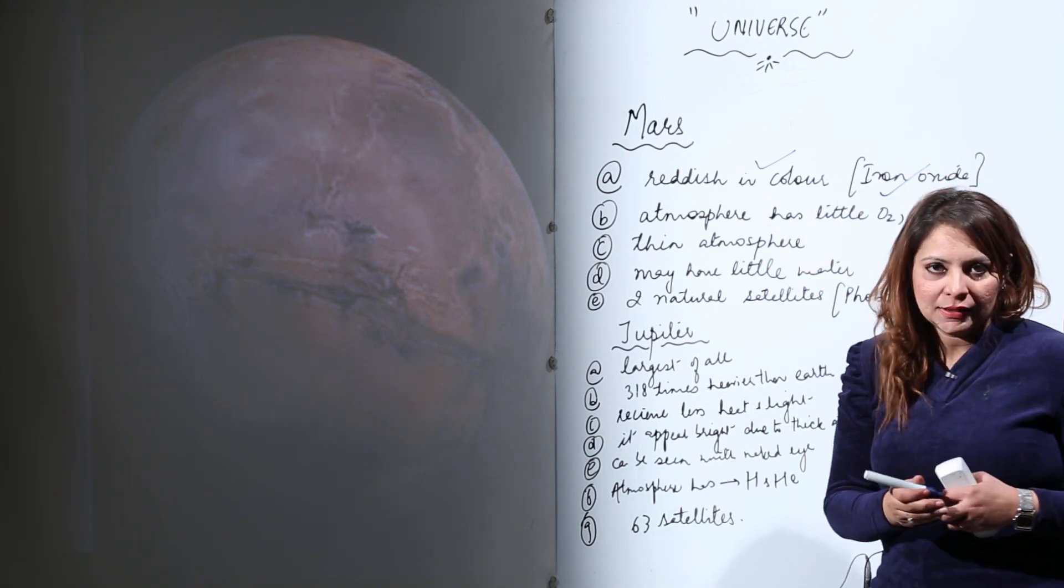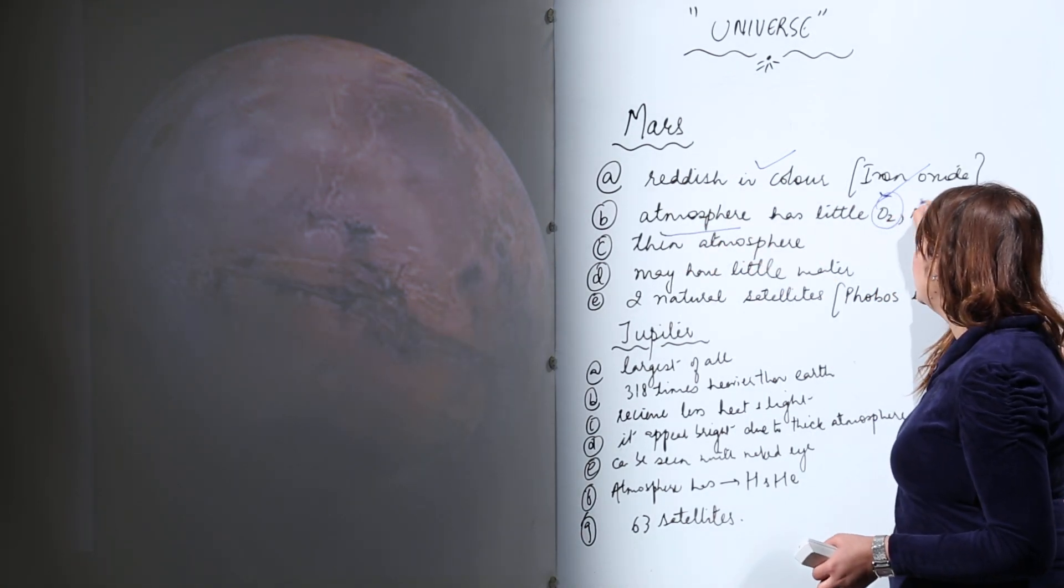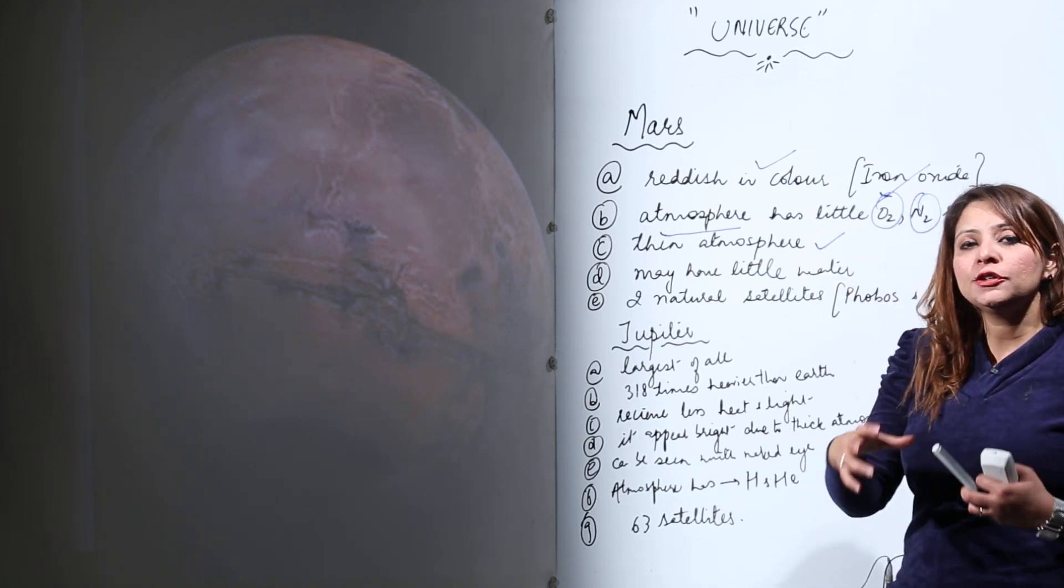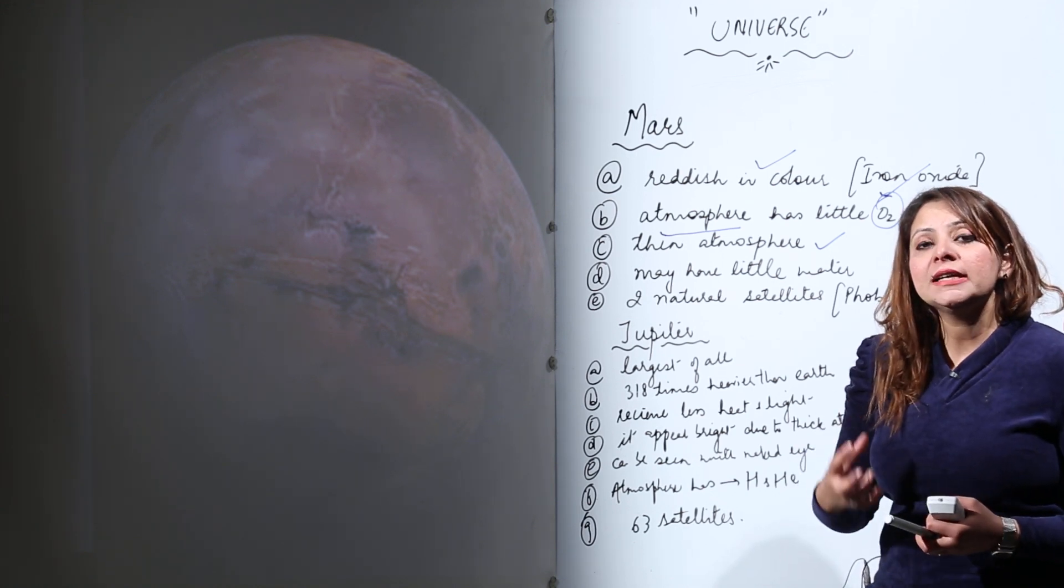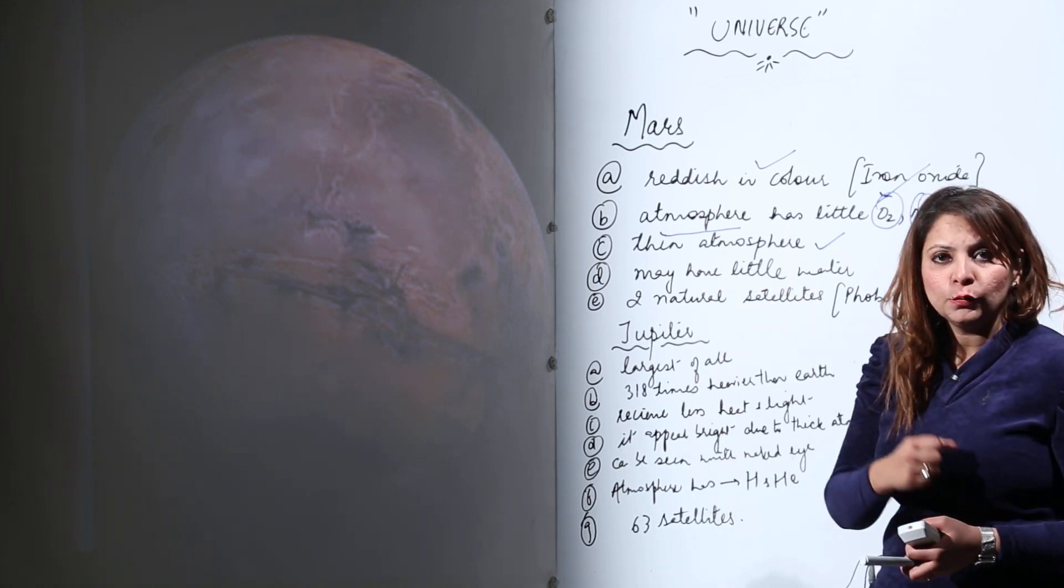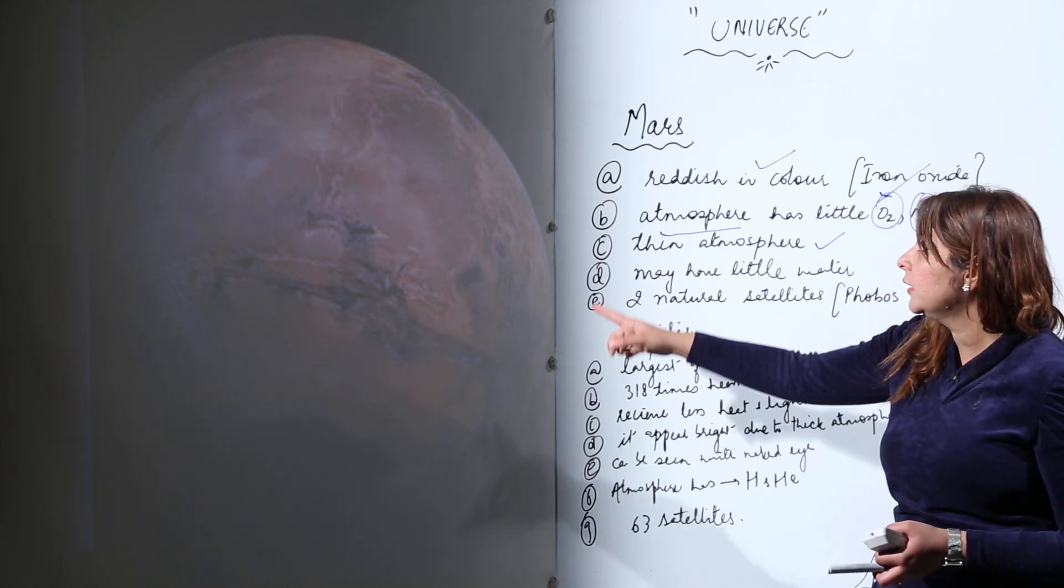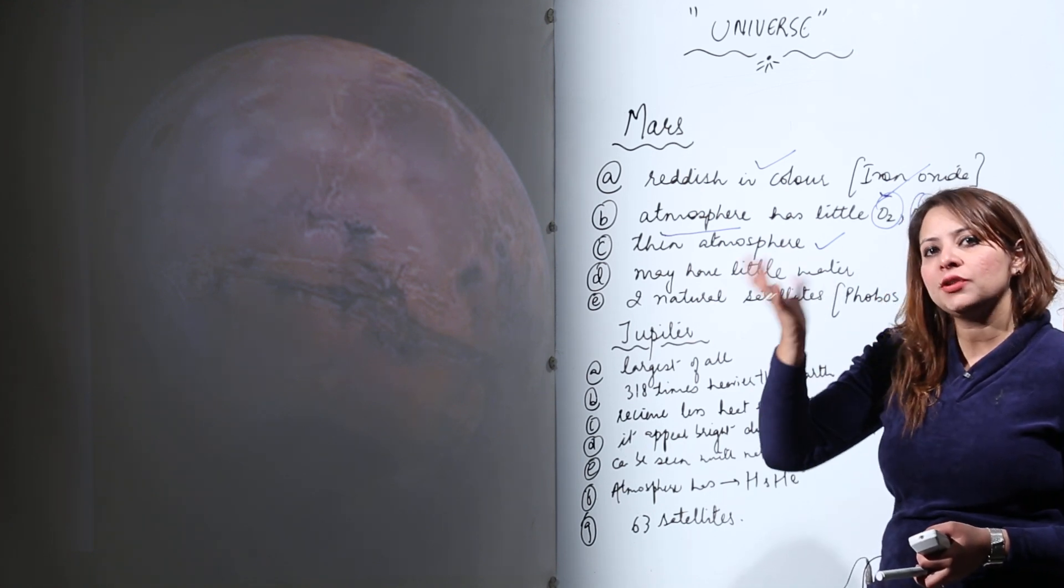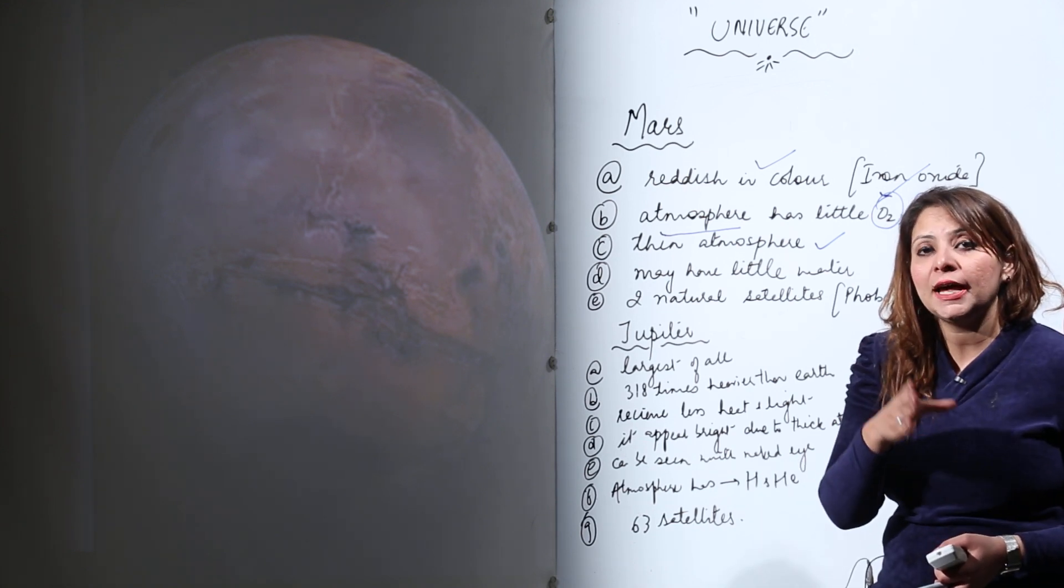Moreover, it has an atmosphere with little amount of O2, N2, and CO2 gas, but it has a thin atmosphere. According to studies by astronauts, they have seen that there is a little amount of water also on its surface. As it has atmosphere and little water, there is a chance that a small amount of life exists on planet Mars. It can support life, but not to a major extent like the Earth can.